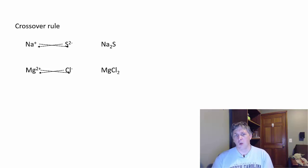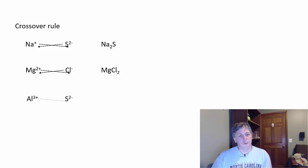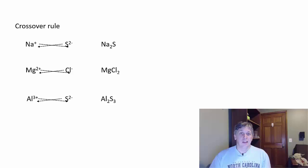For aluminum and sulfur, aluminum has a plus three charge and sulfur has a negative two charge. Using the crossover method: the three goes as a subscript in front of sulfur, and the two goes in front of aluminum — giving you a two-to-three ratio, Al₂S₃. You should always check your formula: two aluminums at plus three and three sulfurs at negative two gives a net charge of zero.